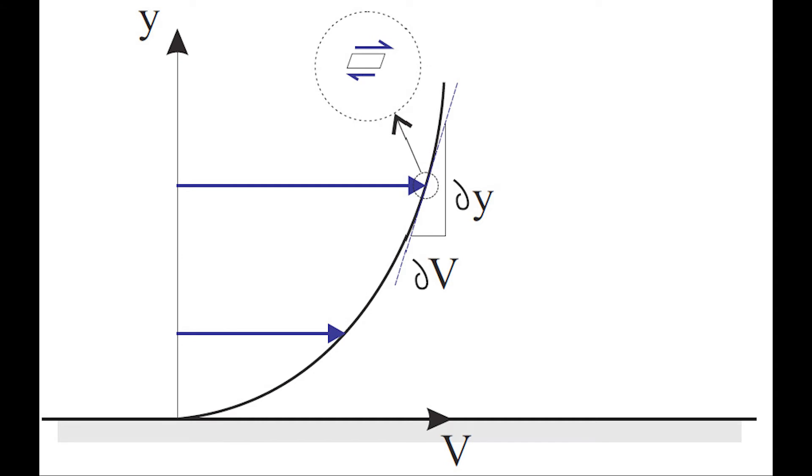The shear stress is proportional to the rate of transfer of momentum. The velocity gradient dV over dy is related to the angular deformation and called the strain rate.